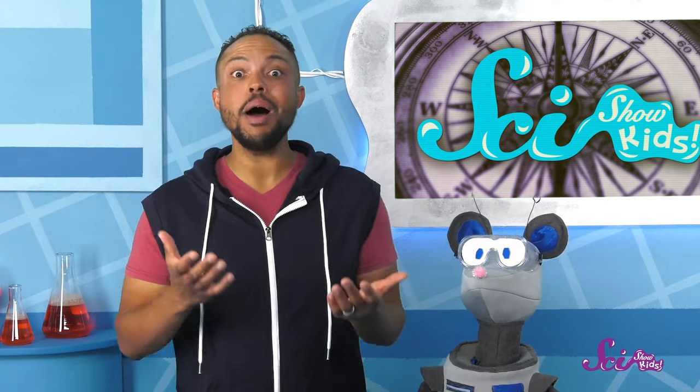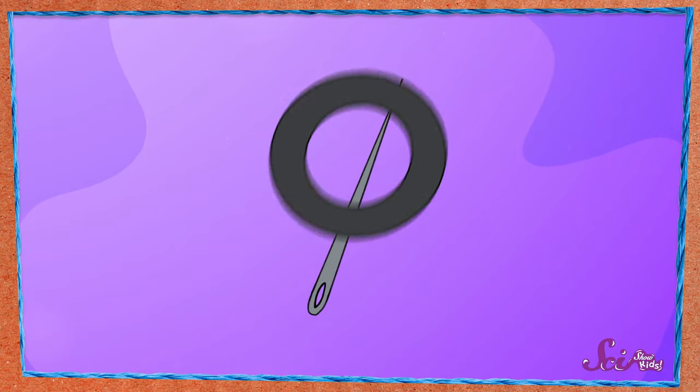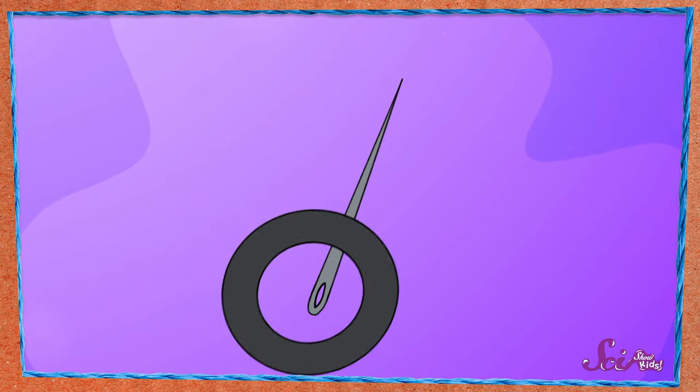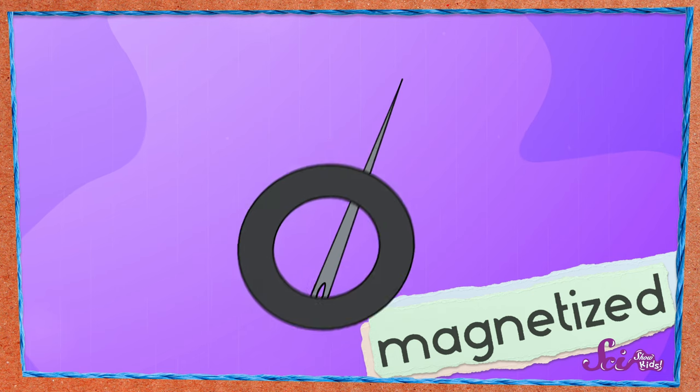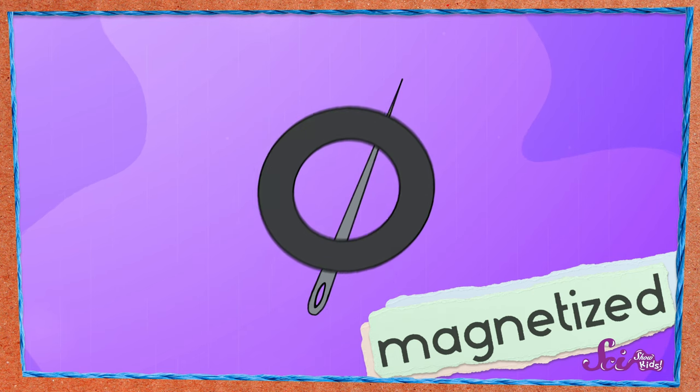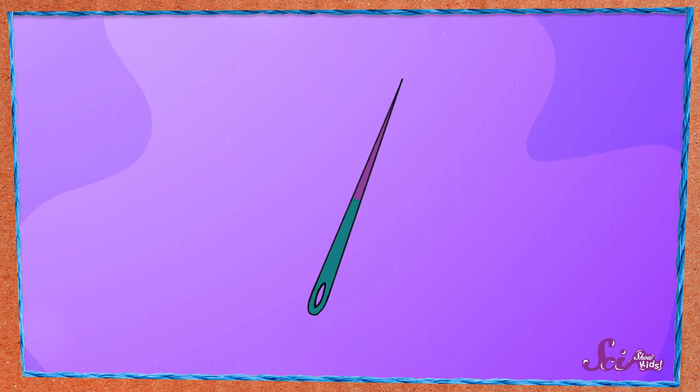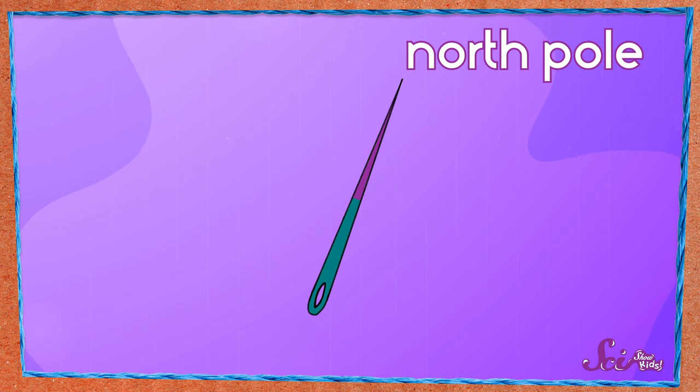Our sewing needle became a magnet! That first step we did, where we rubbed the needle with your magnet, actually magnetized the sewing needle. In other words, it turned it into a magnet. The pointy end became the north pole of a magnet, and the other end became the south pole.